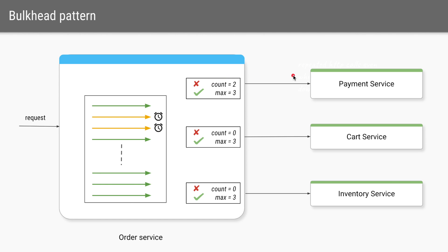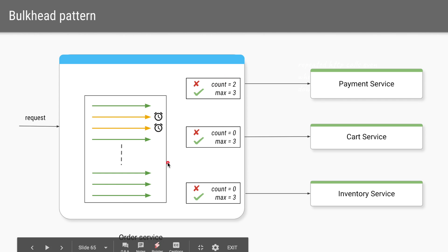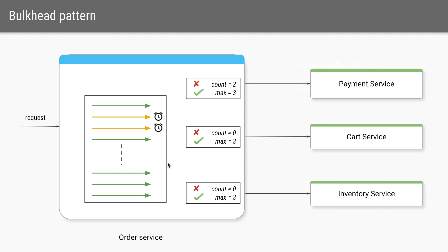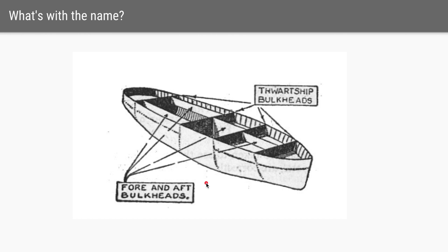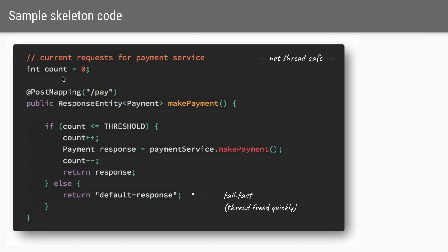This pattern — of setting a maximum threshold of concurrent requests, tracking the number of current in-flight requests to a particular service, and accordingly allowing or denying the request to the external service — is called the bulkhead pattern. The bulkhead pattern is mainly used to isolate dependencies such that a problem in one dependency does not affect our ability to serve requests for any other dependencies. The name bulkhead comes from a technique in building boats where the boat is divided into multiple sections, such that if a single section is flooded it does not flood the entire boat.